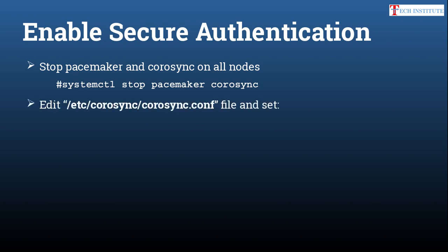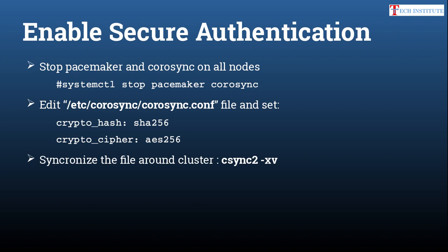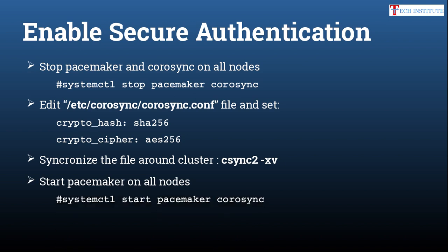Then edit the corosync configuration file at /etc/corosync/corosync.conf and set the following two parameters: crypto_hash to SHA256 and crypto_cipher to AES256. Once you enable these two configurations, that will enable secure authentication inside your cluster communication. Then you need to sync this corosync.conf file across the cluster nodes using rsync with the -xv flag. Once that is done, start pacemaker on all the nodes using the command: systemctl start pacemaker corosync.